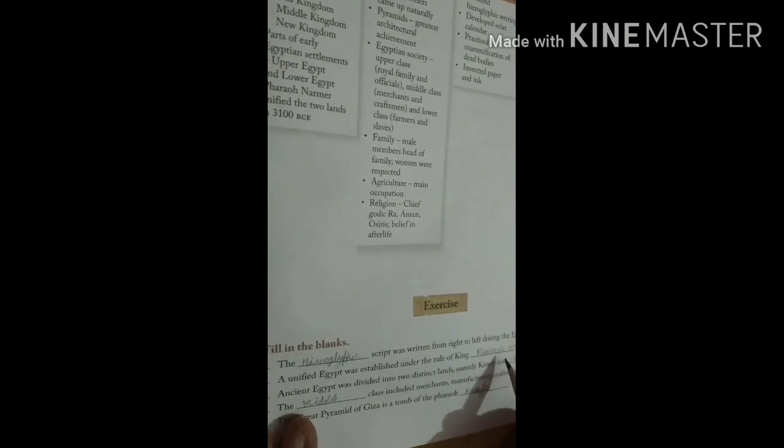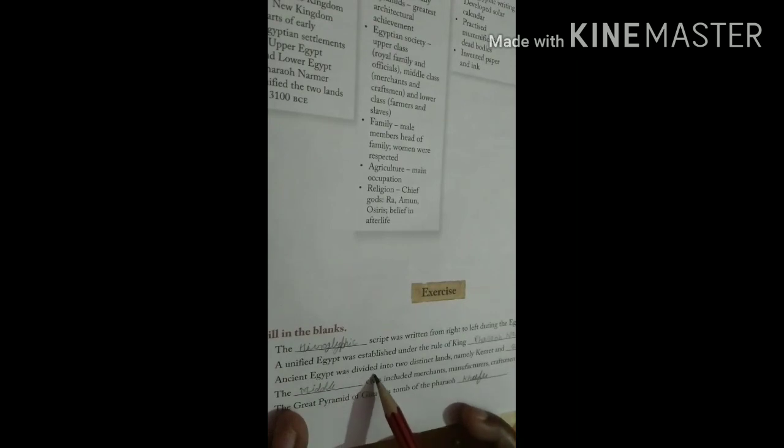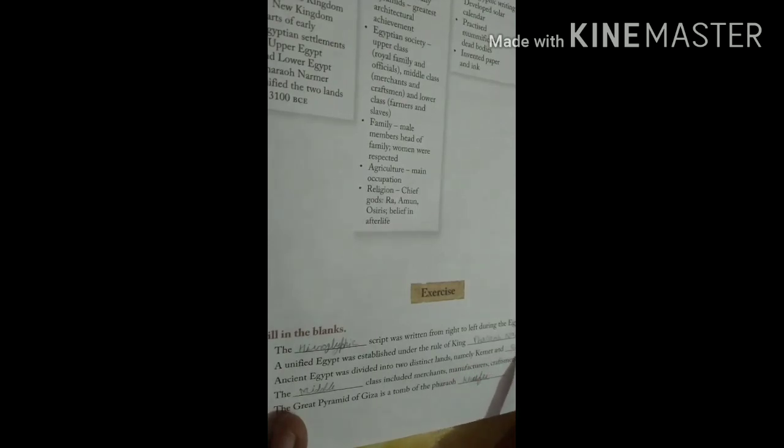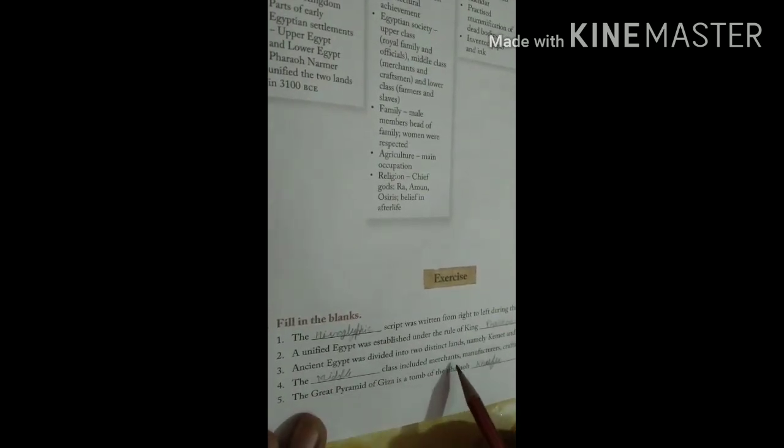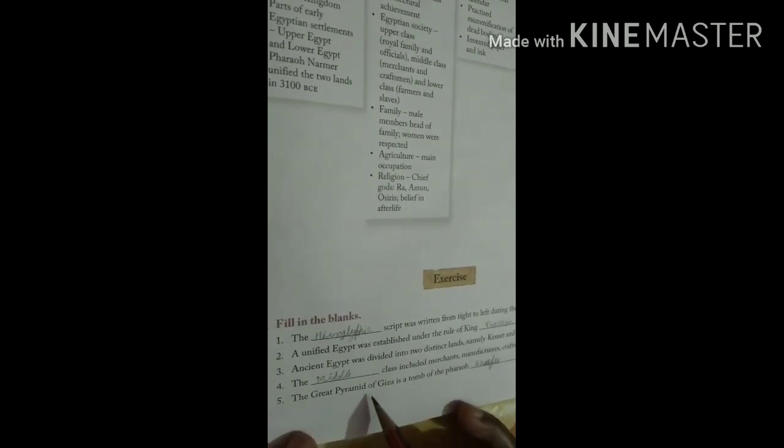Ancient Egypt was divided into two distinct lands, namely Kemet and Deshret (D-E-S-H-R-E-T). Now fourth, the middle class included merchants, manufacturers, craftsmen, and artisans.